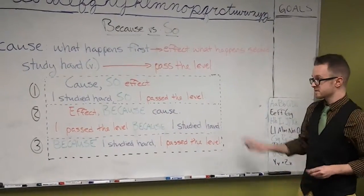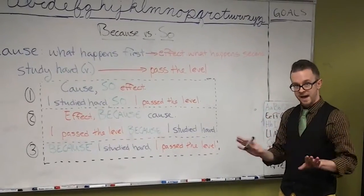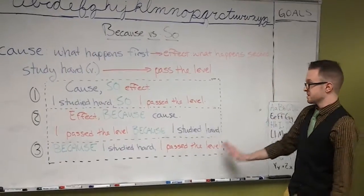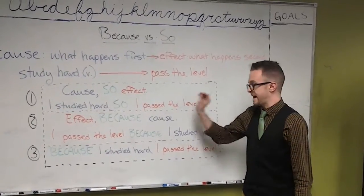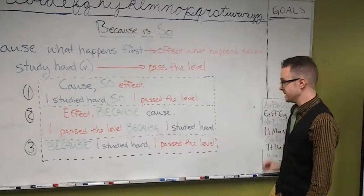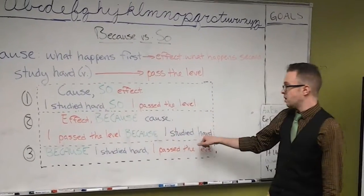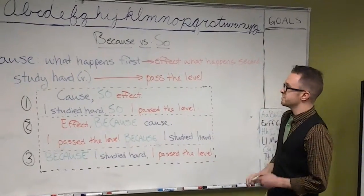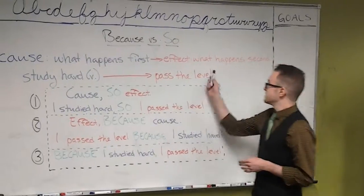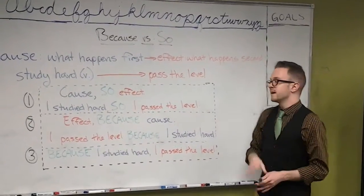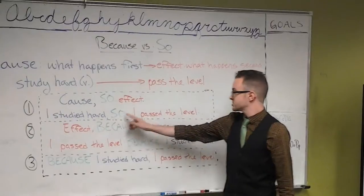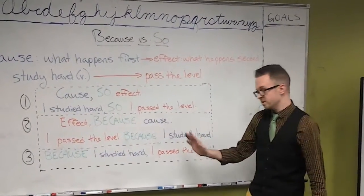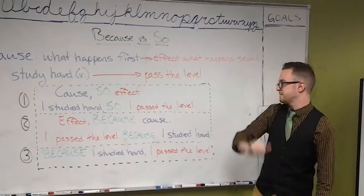The most important thing to notice about these sentences is that they do not have different meanings. The effect is always the same — 'I passed the level,' the second thing. The cause is always the same — 'I studied hard,' the first thing. So to review: the cause is what happens first, the effect is what happens second. We can say: 'I studied hard, so I passed the level.' 'I passed the level because I studied hard.' Or, 'Because I studied hard, I passed the level.'